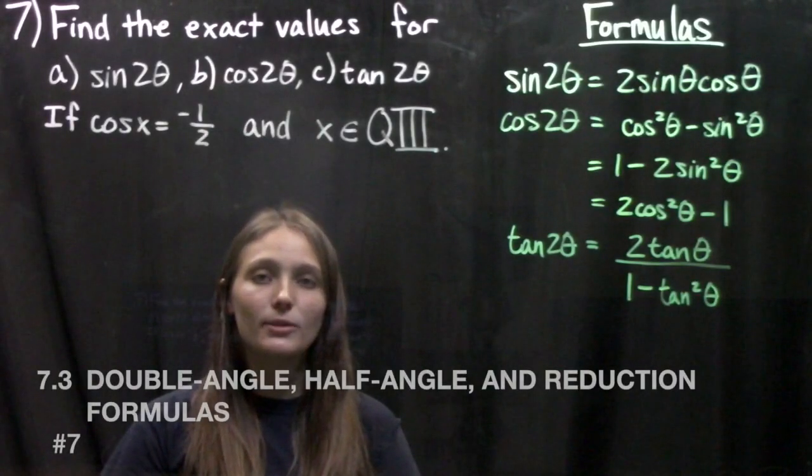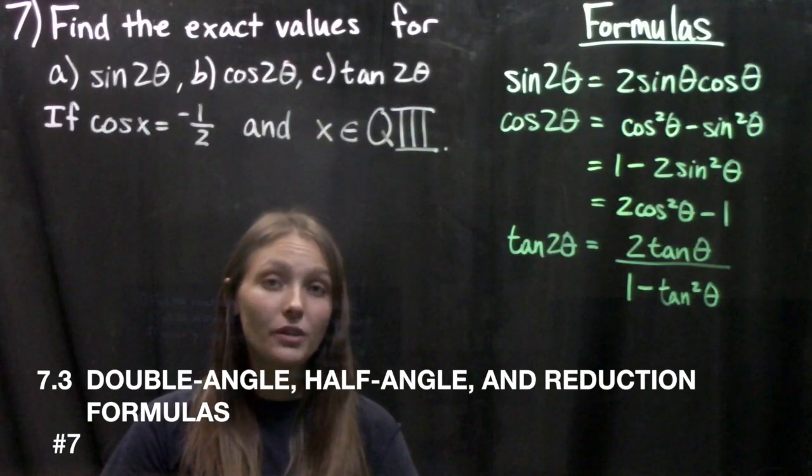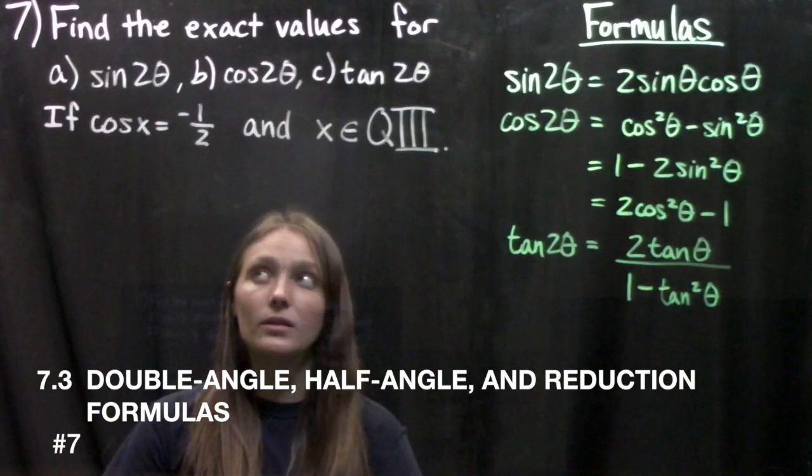Hey guys, today we're going through chapter 7 on trig identities and equations, section 3, covering double angle, half angle, and reduction formulas.